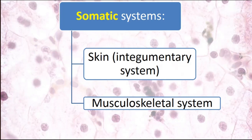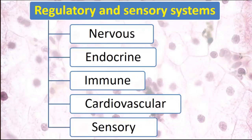All visceral and somatic systems are regulated by regulatory and sensory systems — nervous, endocrine, immune, cardiovascular, and sensory systems. The nervous system provides nervous regulation. The cardiovascular system provides nutrition and transport of different nutrients to support different systems. Sensory organs receive information from the outer environment and give this information to the nervous system, providing the first stage of nervous regulation.